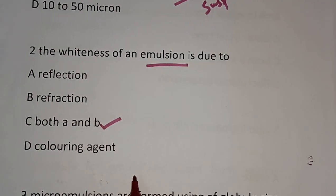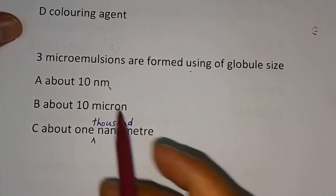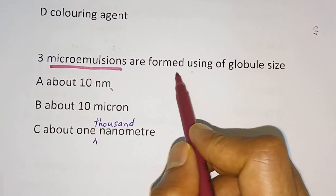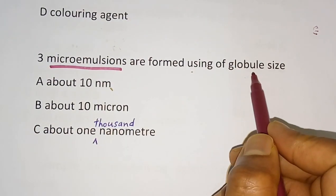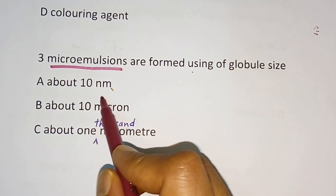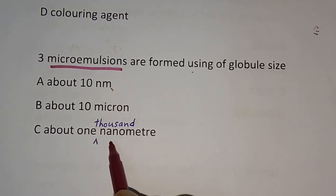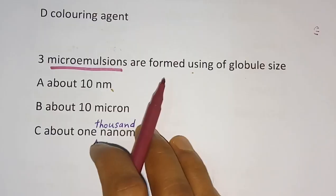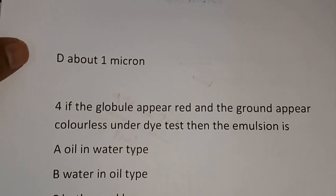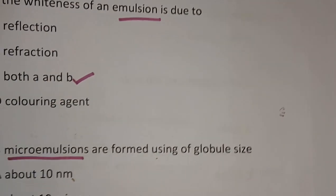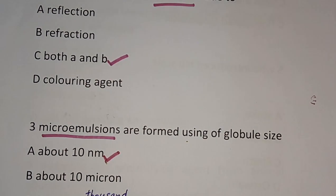Question number 3: Micro emulsion is formed using a globule size of? Options are about 10 nanometer, about 10 micron, about 1000 nanometer, and about 1 micron. The correct answer is about 10 nanometer — that is the globule size for micro emulsion.